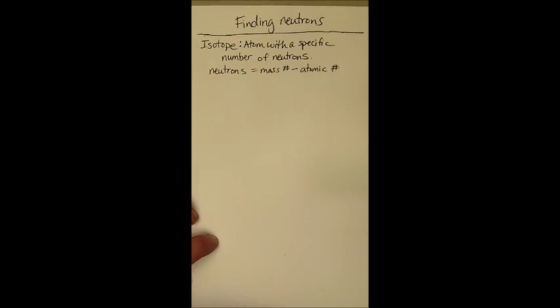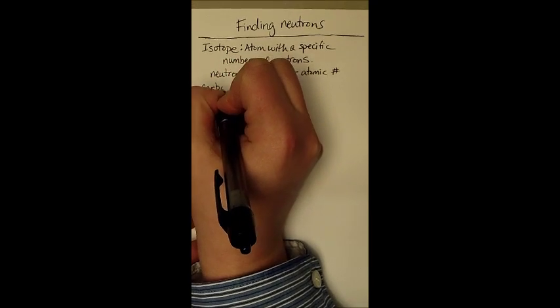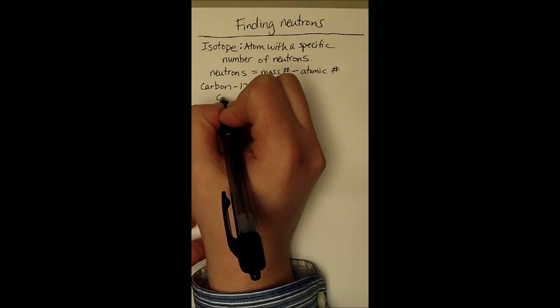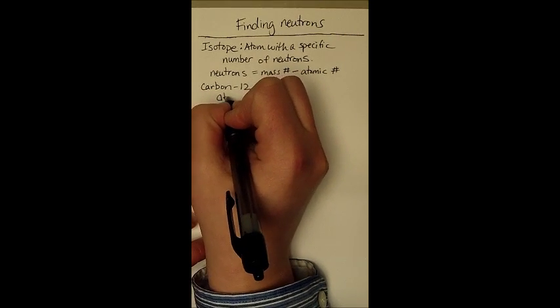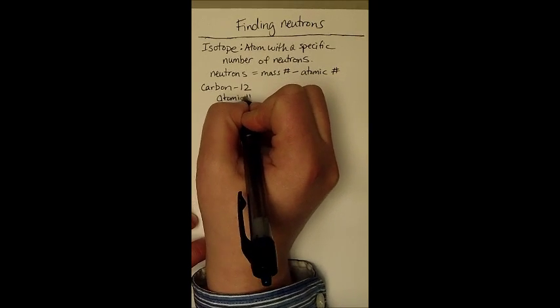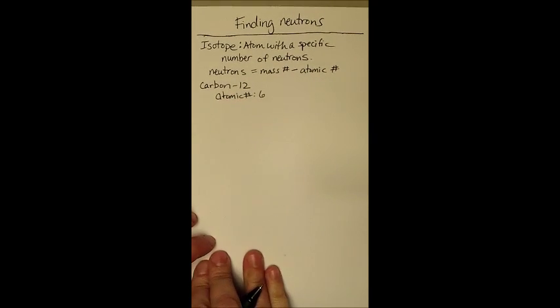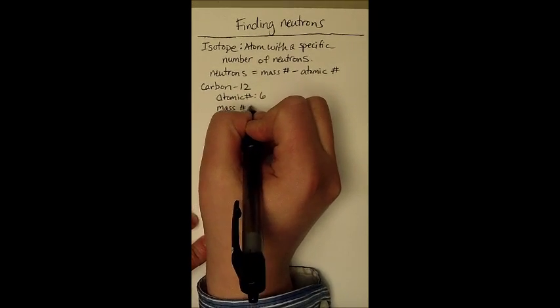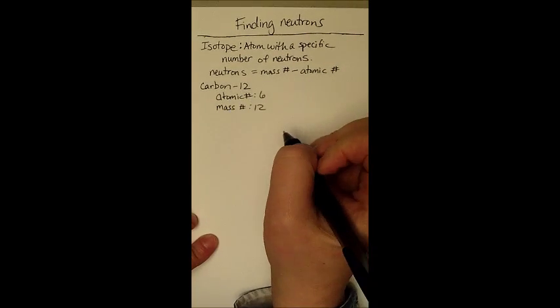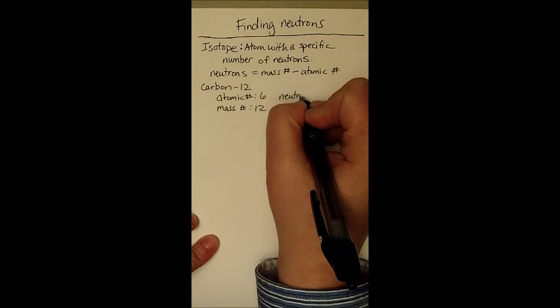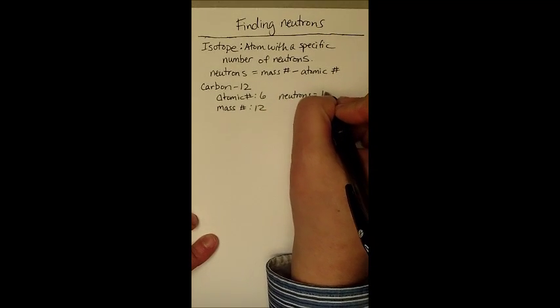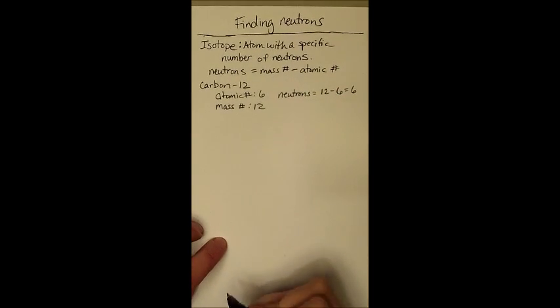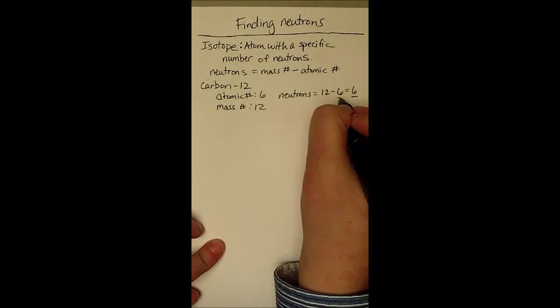Here are some examples. We're going to start out with carbon 12. Carbon has an atomic number of six. That means there are six protons. There will always be six protons in carbon. It has a mass number of 12. We know that because it's carbon 12. We calculate the number of neutrons by taking 12 and subtracting six. We end up getting six. So there are six neutrons and six protons.